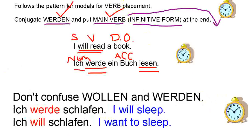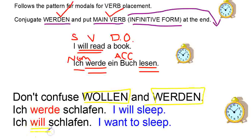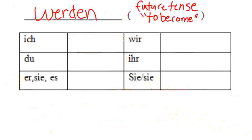Be careful with these two: 'wollen' means 'to want' and 'werden' is future tense. This is a false cognate — 'ich will schlafen' looks like 'I will sleep' to an English speaker, but it actually means 'I want to sleep.' Always make sure you're using 'wollen' and 'werden' correctly.